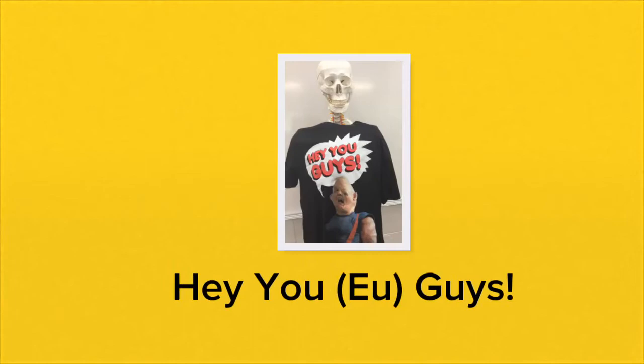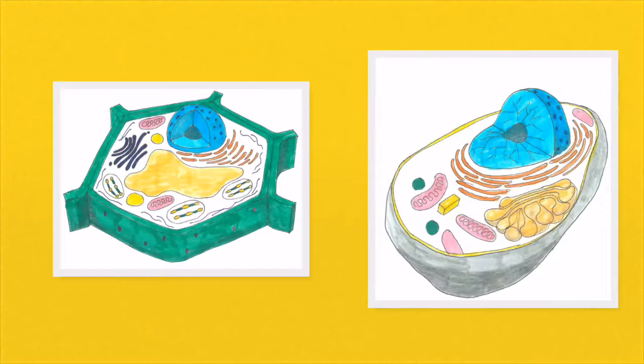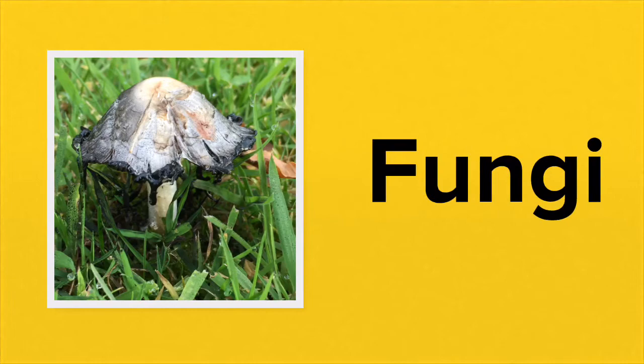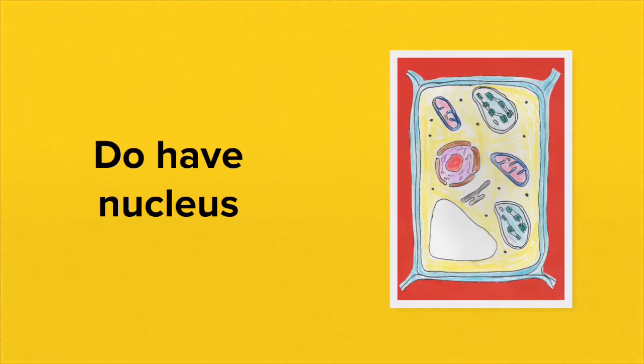The second category of cells are the eukaryotic cells. The mnemonic 'hey you guys' always helps you remember eukaryotic cells. Eukaryotic cells include plant cells, animal cells, and fungi, though for now let's just consider plant and animal cells.